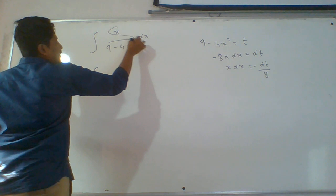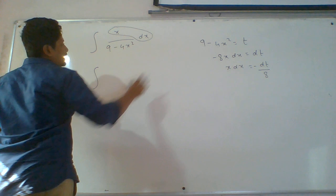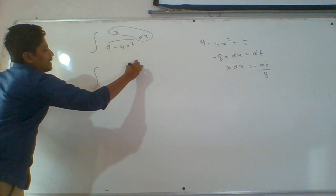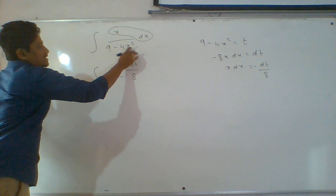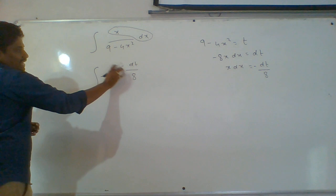In the place of 9 minus 4x square we put t, and the bottom function converts in terms of t. The numerator becomes minus dt by 8, and we can take minus 1 by 8 as common outside the integral.